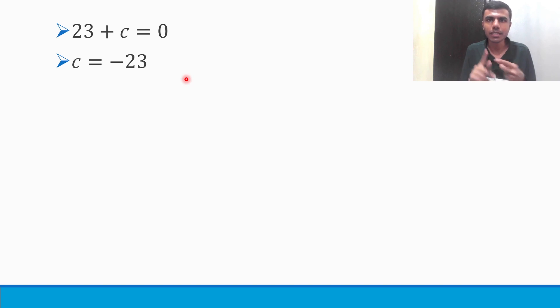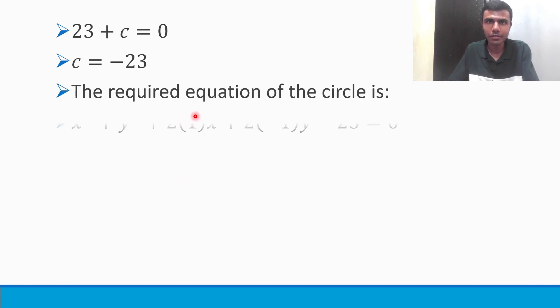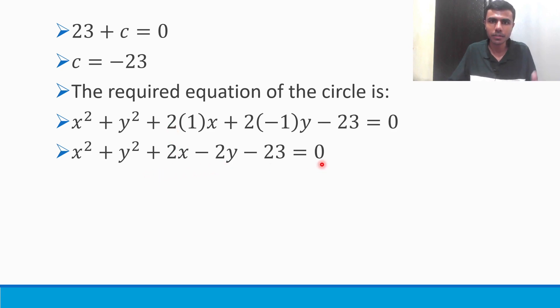So I got g, I got f and I got c. My question is almost done. Just one thing is left out. What is that one thing? Is to just substitute all of them in the equation which I took. The equation of circle is: required equation of circle is x² + y² + 2(1)x + 2(-1)y - 23 = 0. Now I'll get x² + y² + 2x - 2y - 23 = 0. Thank you very much for staying with me up till now.